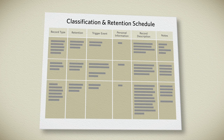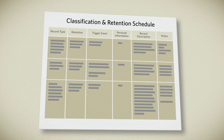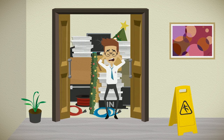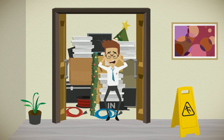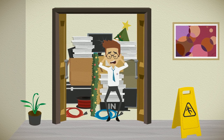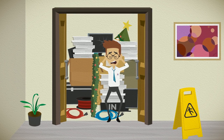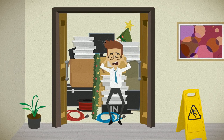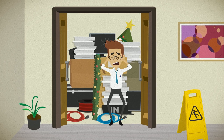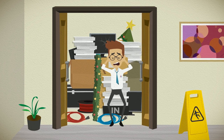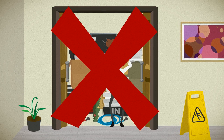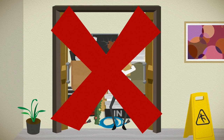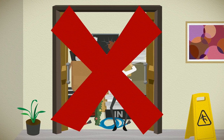Classification and retention schedules also help in the disposition of records. Let's say you run out of storage space in a closet or shared drive — you cannot just arbitrarily start shredding or deleting records. Records are evidence of actions and transactions, and if they are requested by management, auditors, or the courts, they must be available.